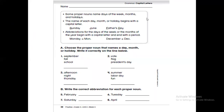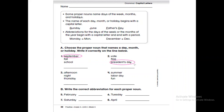Let's look here. Choose the proper noun — a day, month, or holiday — and write it correctly with capital letters. September, fall, or school — September is the name of a month, so it should start with a capital letter. Boat, flag, or President's Day — President's Day is a holiday, so it should start with capital letters: President's Day. Afternoon, night, or Thursday — Thursday should start with capital letters. Summer, Labor Day, or fun — Labor Day should start with capital letters.